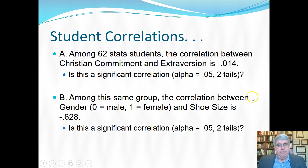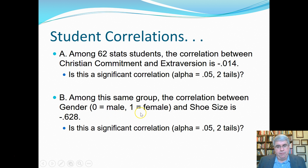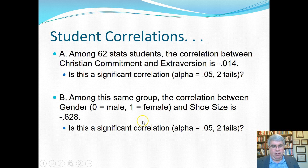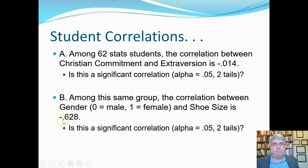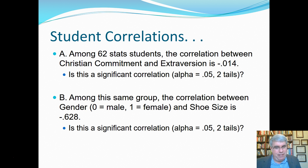The second example uses the same group of 62 students, so degrees of freedom equals N minus 2, which is 60. The correlation between gender — where 0 equals male and 1 equals female — and shoe size is minus 0.628. The negative sign means that as gender goes from male toward female, shoe size decreases, which means females have smaller shoe sizes. That's probably what everybody would have guessed.